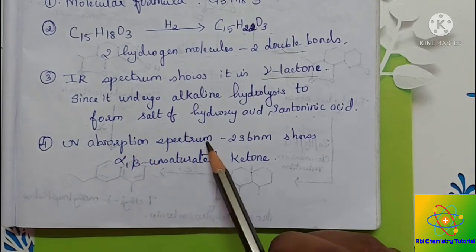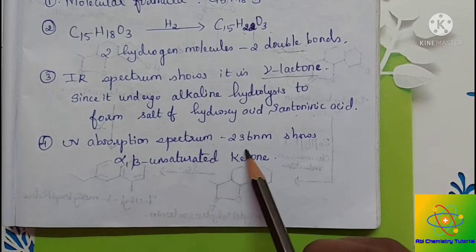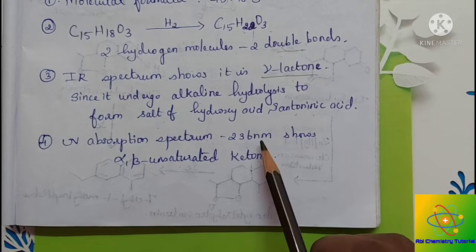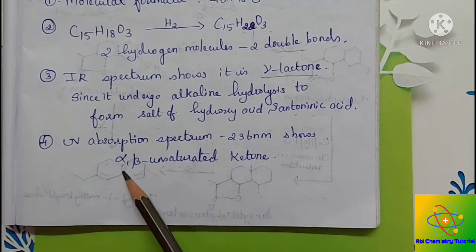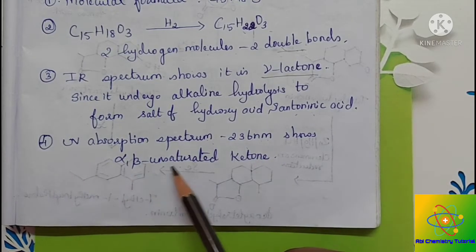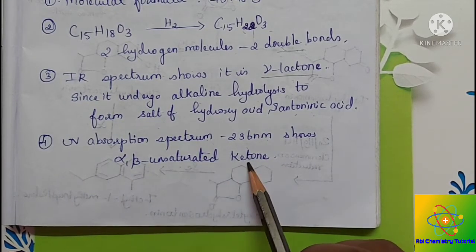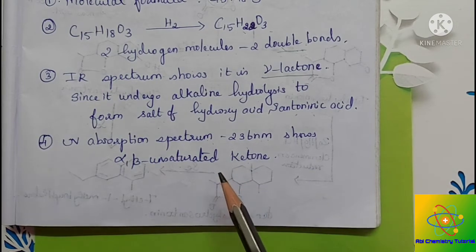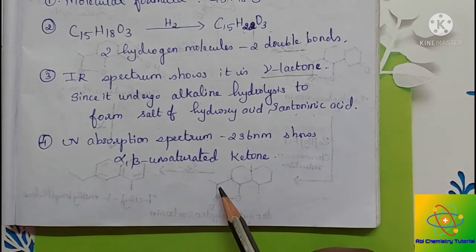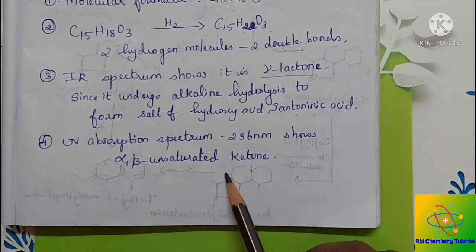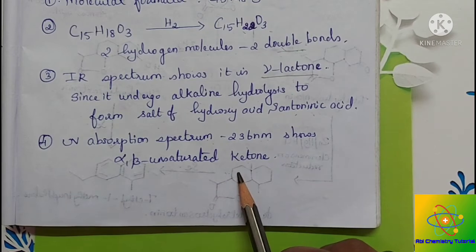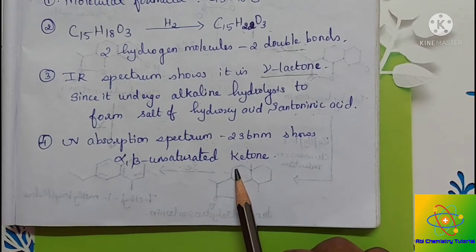The UV absorption spectrum gives an absorption at 236 nanometers, which shows that it is an alpha-beta unsaturated ketone. From this, we know there is a keto group present — it may be a lactone or a ketone — along with a double bond.